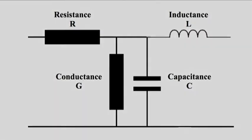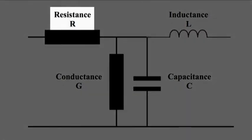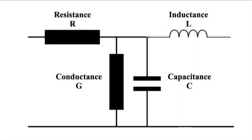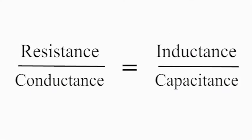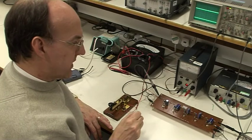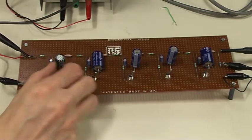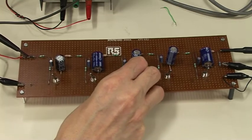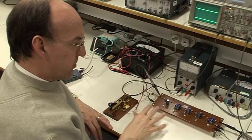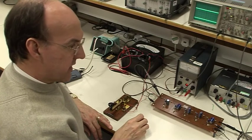So Oliver Heaviside did a more complete analysis of transmission lines and he discovered that what really matters is that the resistance, the conductance, the inductance and capacitance need to be in a specific ratio. And if you can achieve that ratio, this spreading effect of pulses will be greatly diminished. Now with the circuit we have here, we can demonstrate that because by flicking these switches, this will change the value of the capacitance in this case so that all the other components match the Heaviside equation.